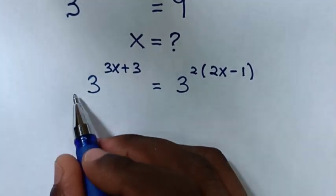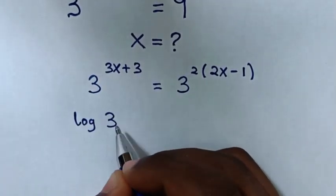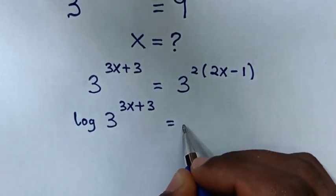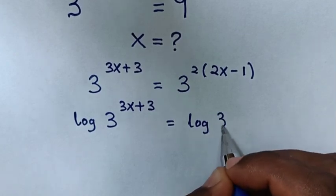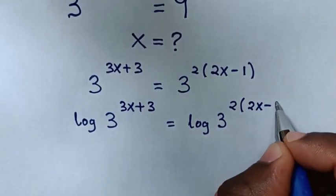In the next step, we apply log to both sides. So our equation will be log of 3 power of 3x plus 3 is equal to log of 3 power of 2 bracket 2x minus 1 bracket.